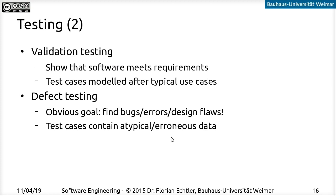We check how the atypical data is handled. If we get a complete failure — crash, stack overflow, or whatever — or if the system actually just shows an error message and tells us the data is wrong, that's the ideal case. So this is the difference between those two aspects of testing: on one hand we want to show that our software can handle typical data, and on the other hand we want to see how our software handles atypical data which intentionally contains errors, to see if we can spot any flaws in our design.